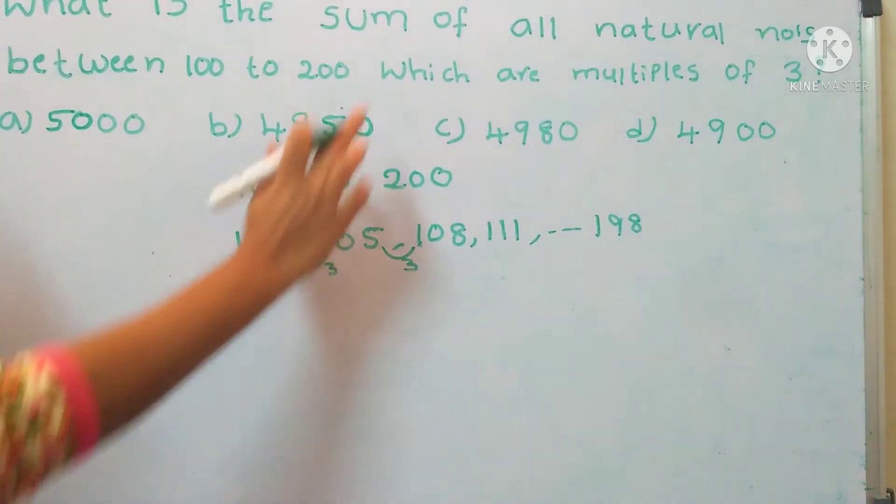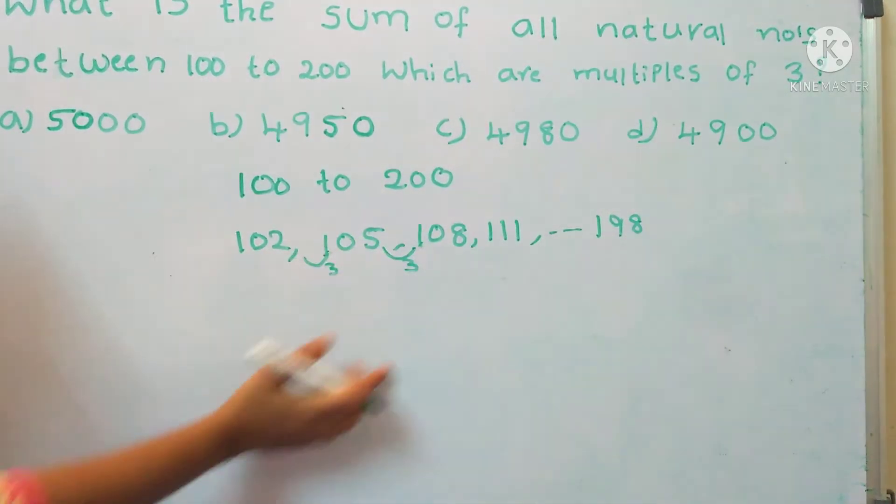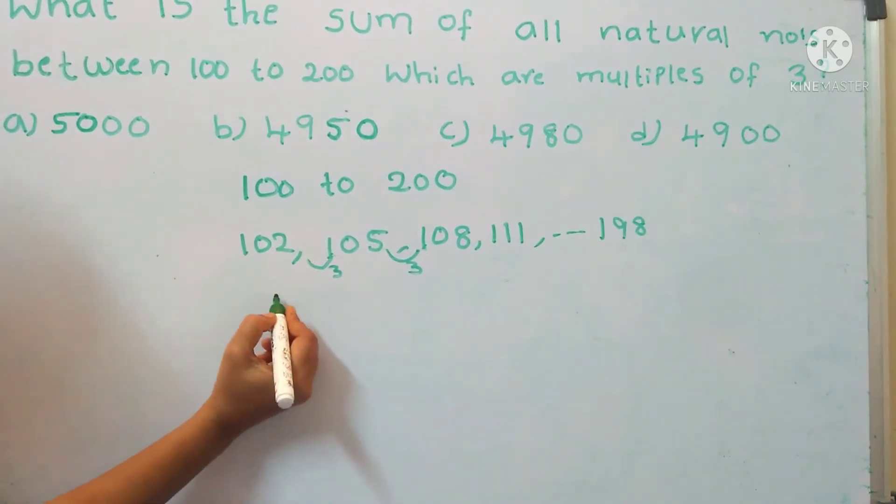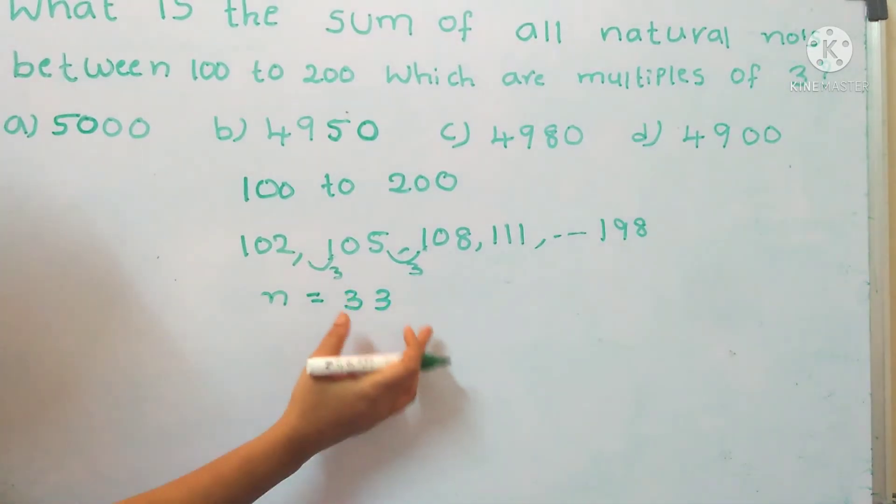Now we need to find out the sum of the numbers between 100 to 200. We have number of terms n equals 33, and this series is in AP, that is arithmetic progression.